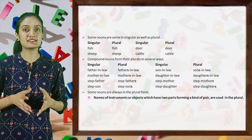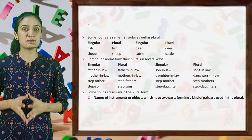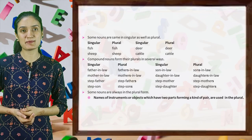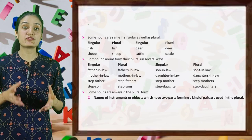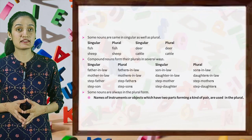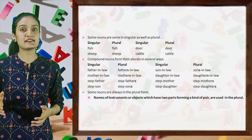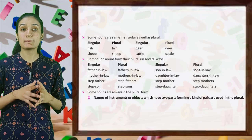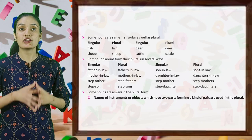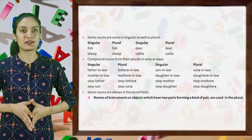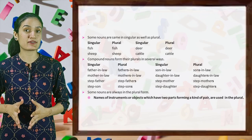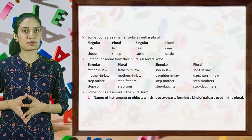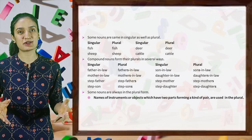Some nouns are the same in singular as well as plural: fish, deer, sheep, cattle — these words remain the same. Compound nouns form their plurals in several ways: father-in-law → fathers-in-law, son-in-law → sons-in-law, mother-in-law → mothers-in-law, daughter-in-law → daughters-in-law, stepfather → stepfathers, stepmother → stepmothers, stepson → stepsons, stepdaughter → stepdaughters.